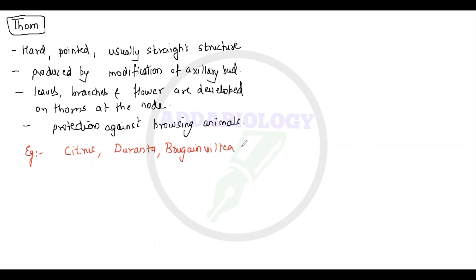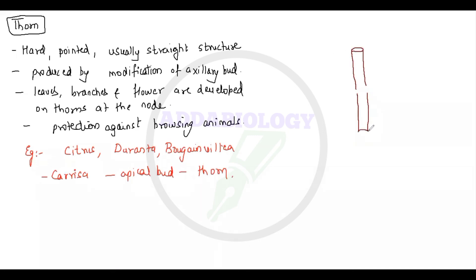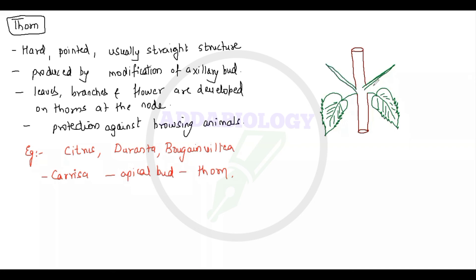Other examples of thorns include Duranta, Bougainvillea, and Carissa. In Carissa, the apical bud modifies into a thorn, but in the rest of the plants the axillary bud modifies into a thorn. Remember: if a stem modifies into a thorn, it is for only two reasons — protection from browsing animals, and prevention of water loss by transpiration.